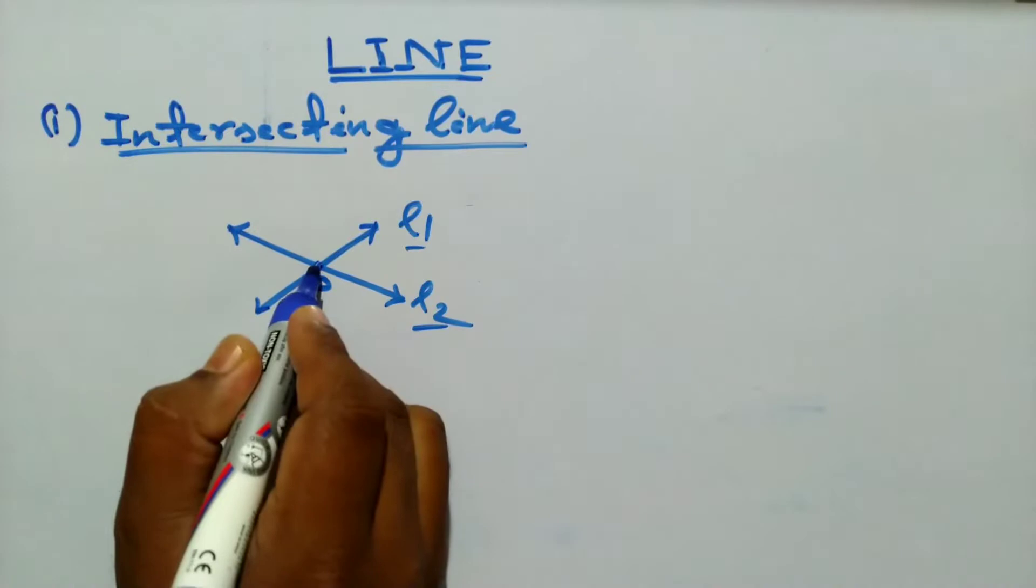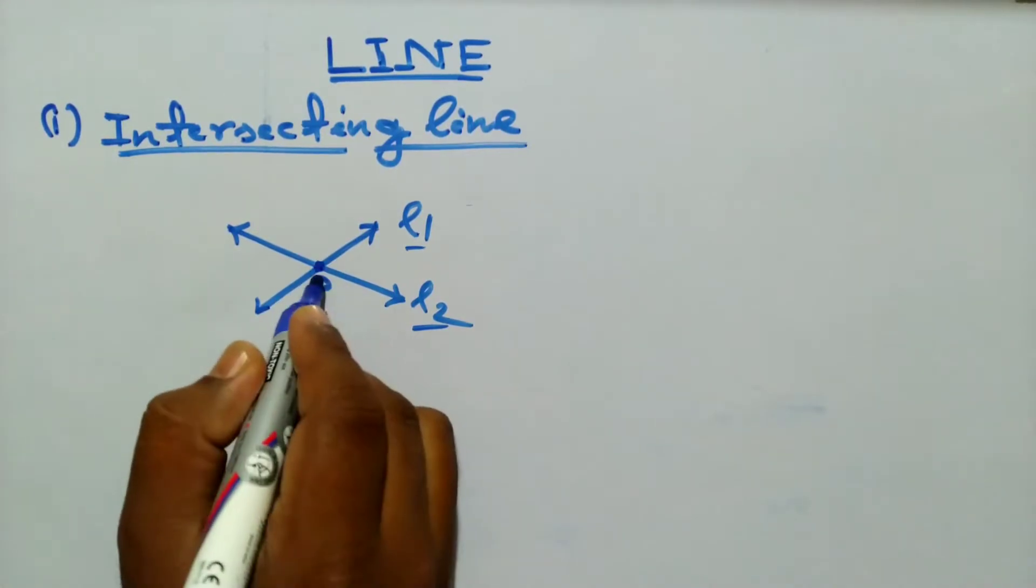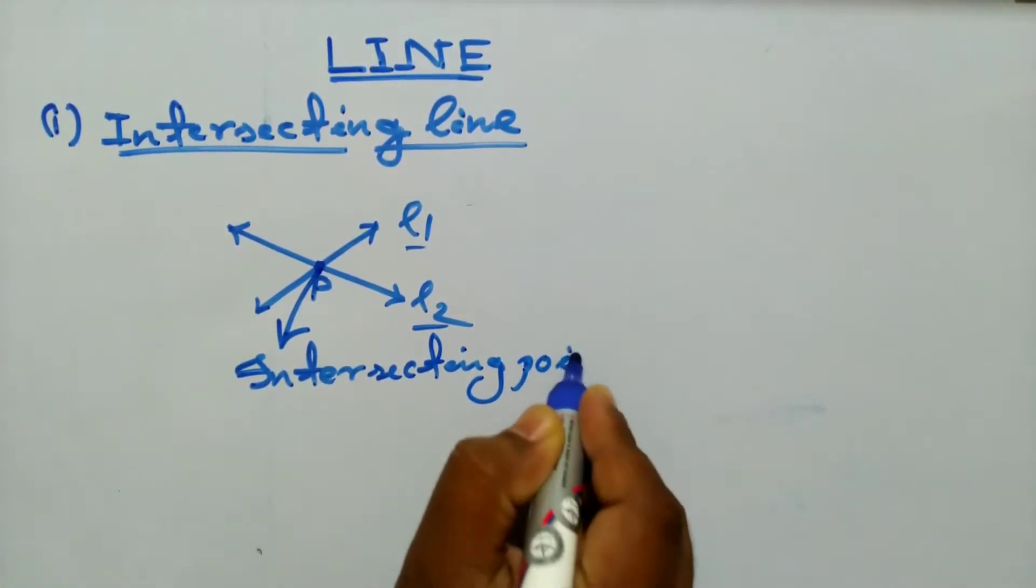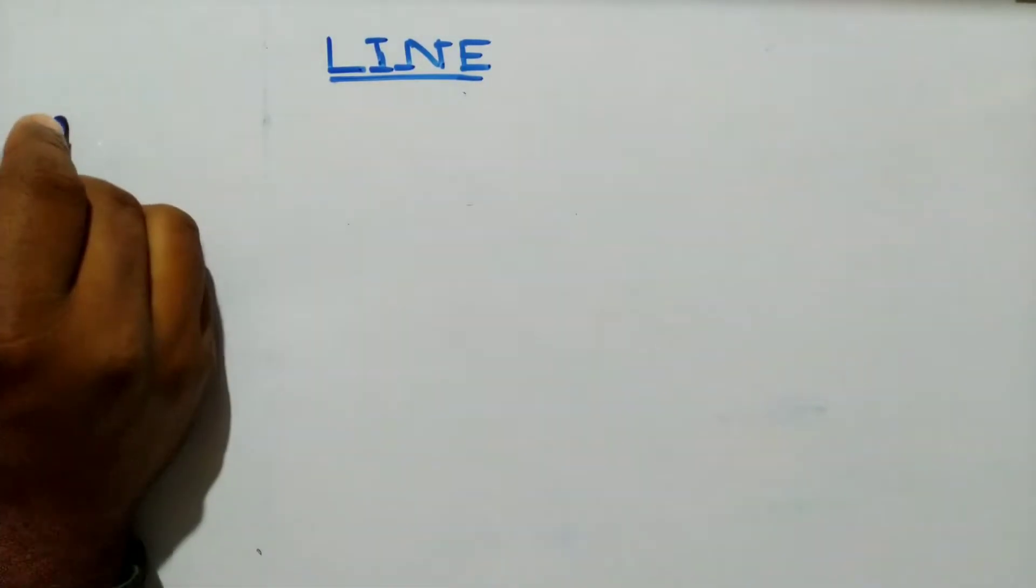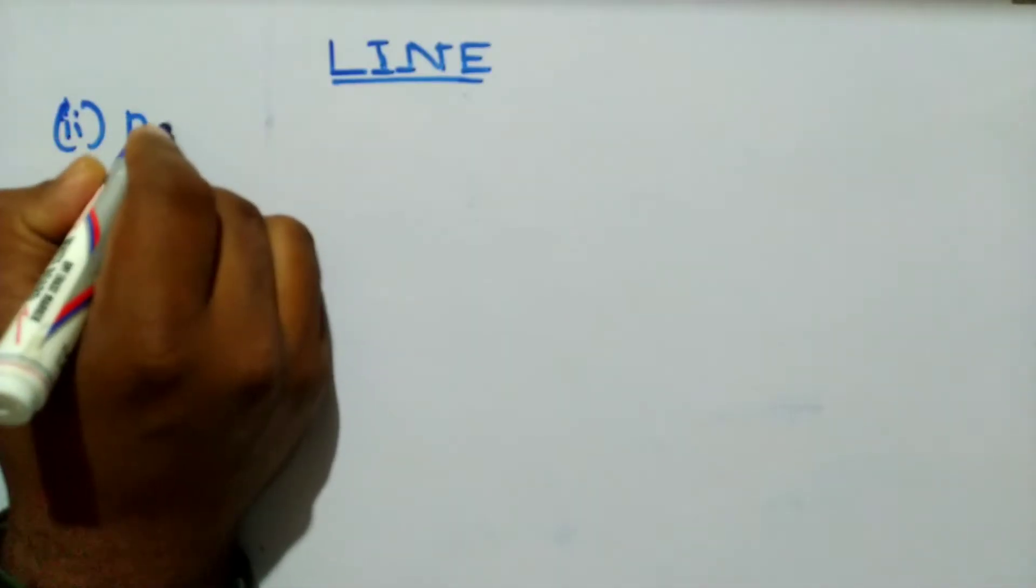This common point is called the intersecting point. Number two is parallel lines.